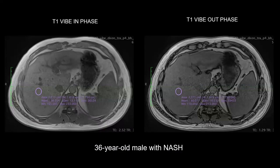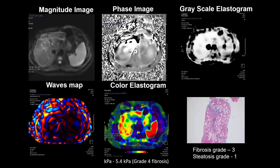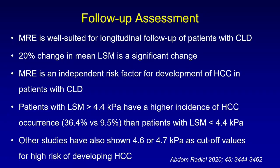This is a male patient with NASH-related disease. There is not much signal drop on in-phase and out-of-phase images. When we ran the MRE, the color elastogram shows red color coming onto the map. After calculating ROIs on the four acquired slices, this was determined to be grade 4 fibrosis.